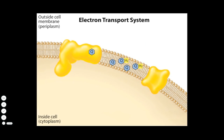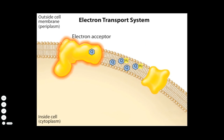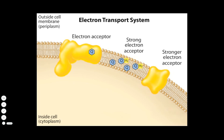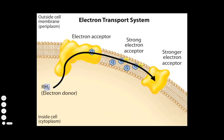An electron transport system consists of a series of electron carriers that sequentially transfer electrons to the carrier with the next higher reduction potential — that is, to a stronger electron acceptor. Electron flow begins with an initial electron donor, such as a carbohydrate, and ultimately transfers all electrons to the strongest electron acceptor, which in this example of aerobic respiration is molecular oxygen.